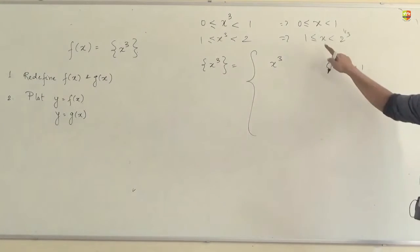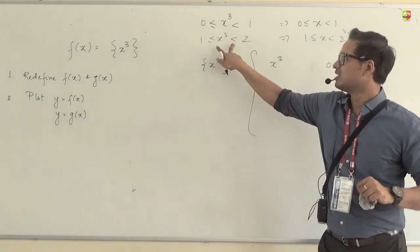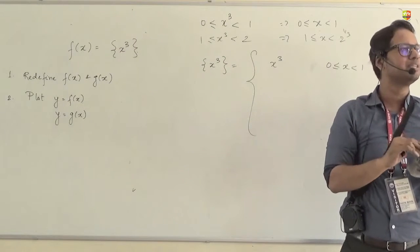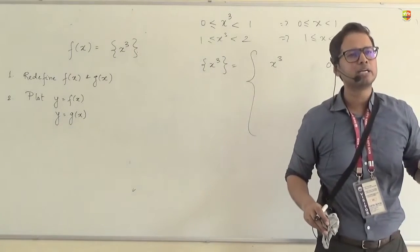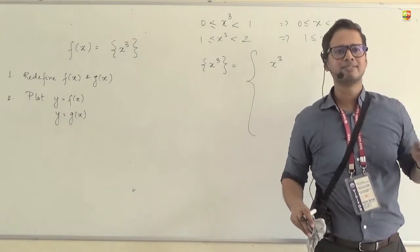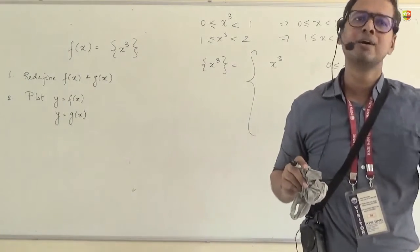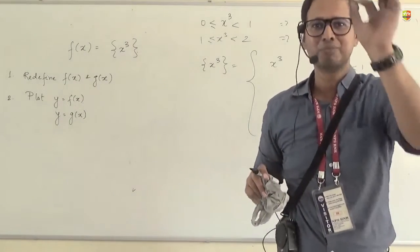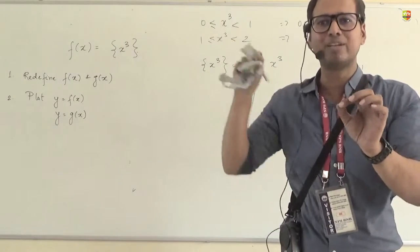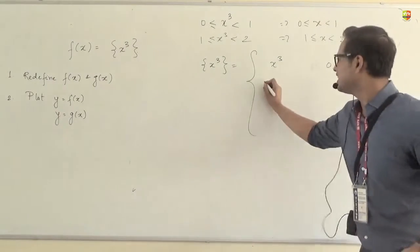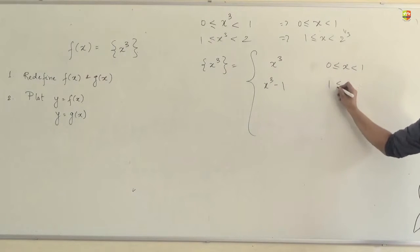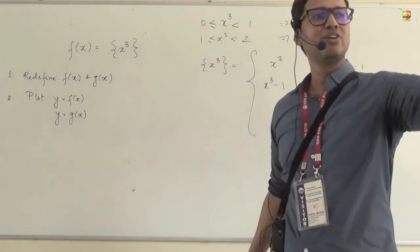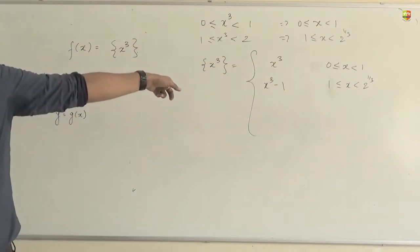So, when you are in this interval, what will be the fractional part of x cube then? Something. Let's say a number between 1 and 2. Take any number between 1 and 2 in your mind. 1.3. What will be the fractional part of 1.3? 0.3. How did you get that 0.3? Subtracting 1 from your answer. So, can I say? It will be x cube minus 1 if x squared to lie between 1 and cube root of? Does that clarify your doubt, Anjali? Does this clarify your doubt?